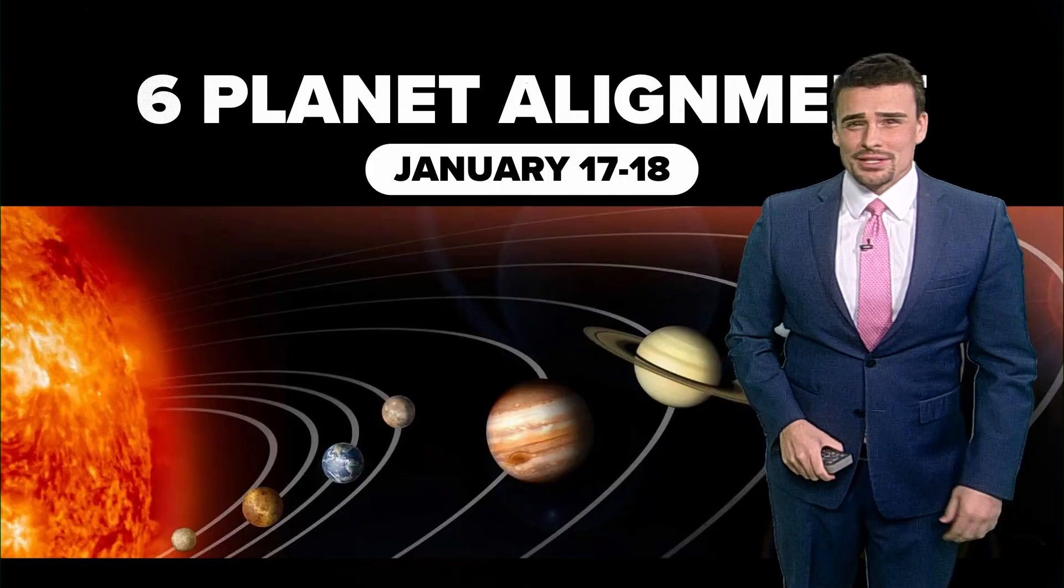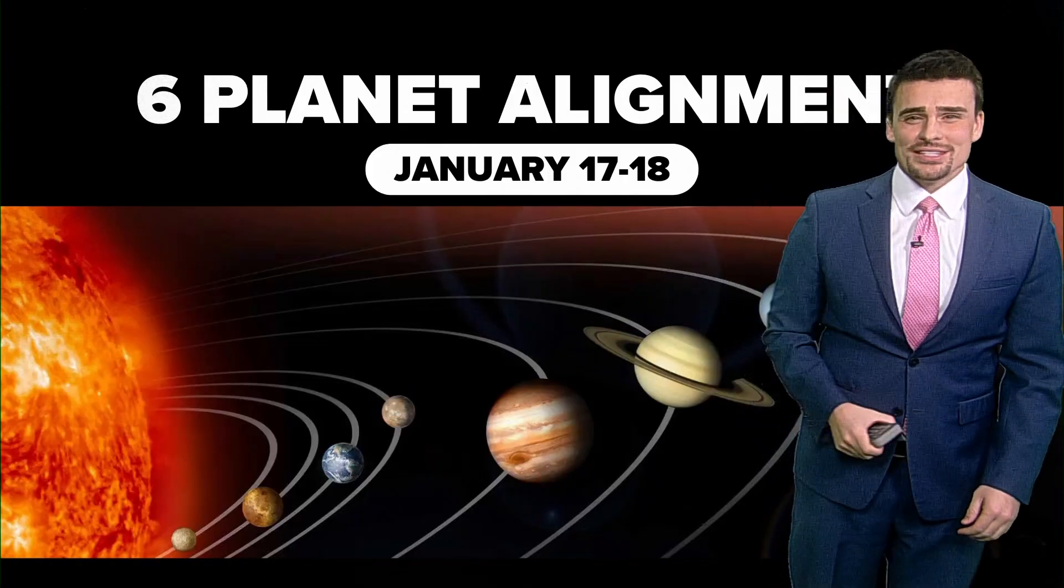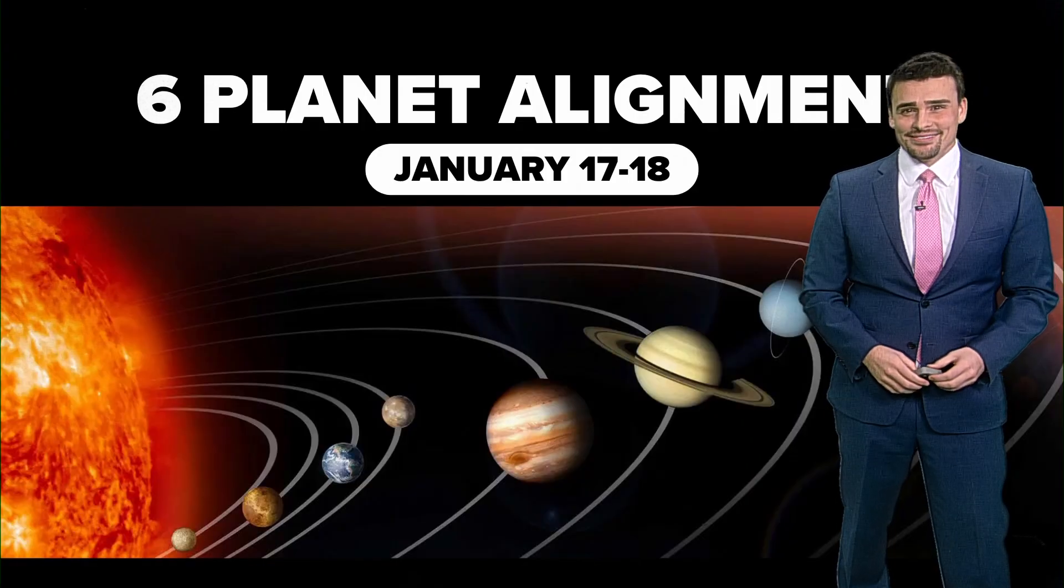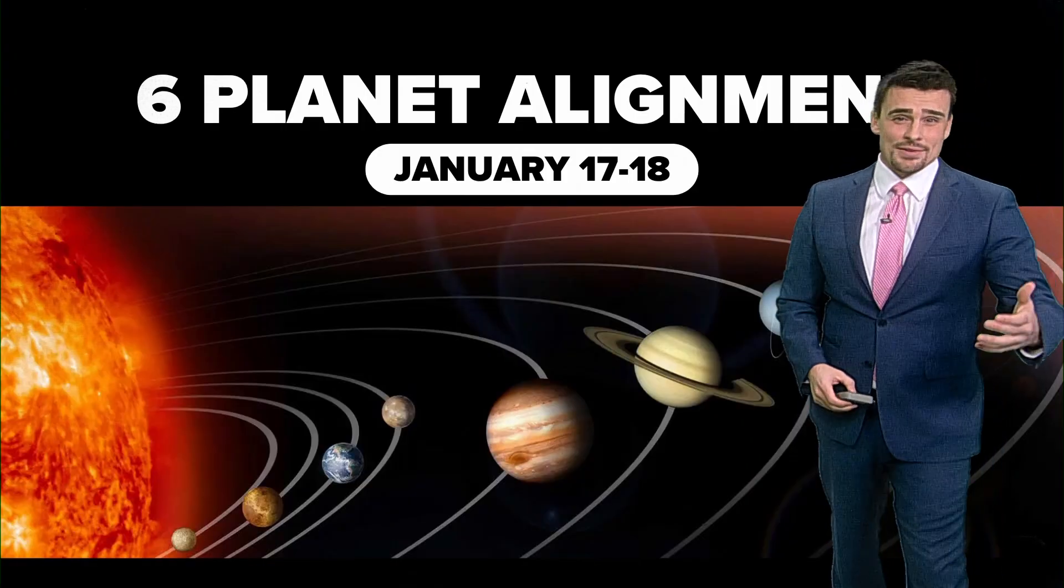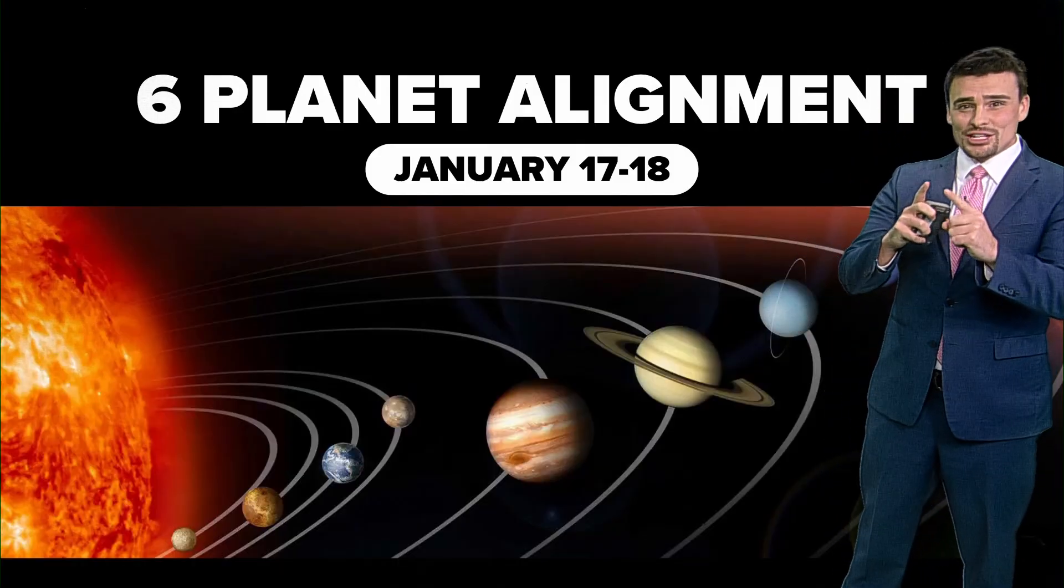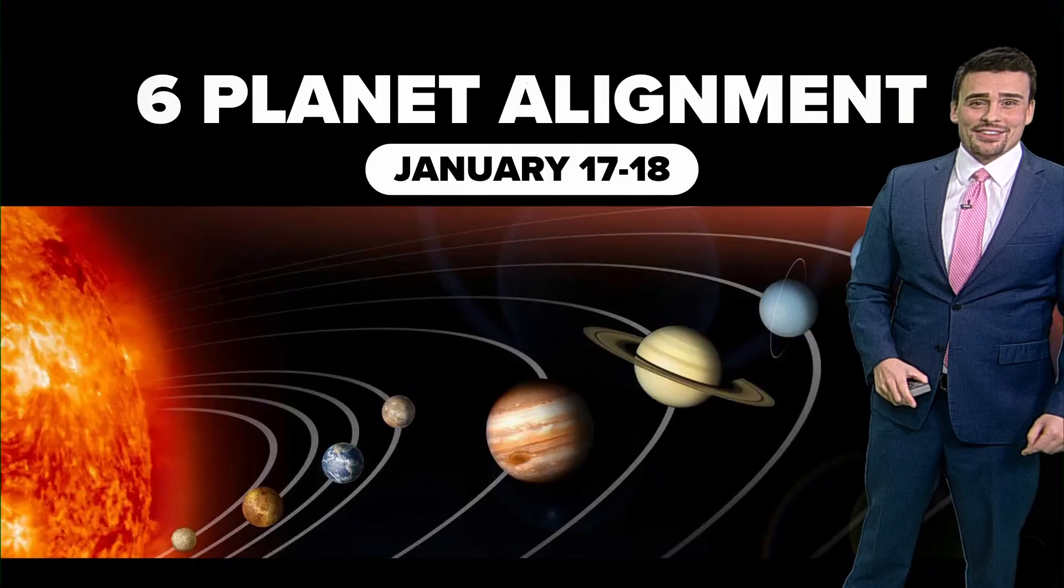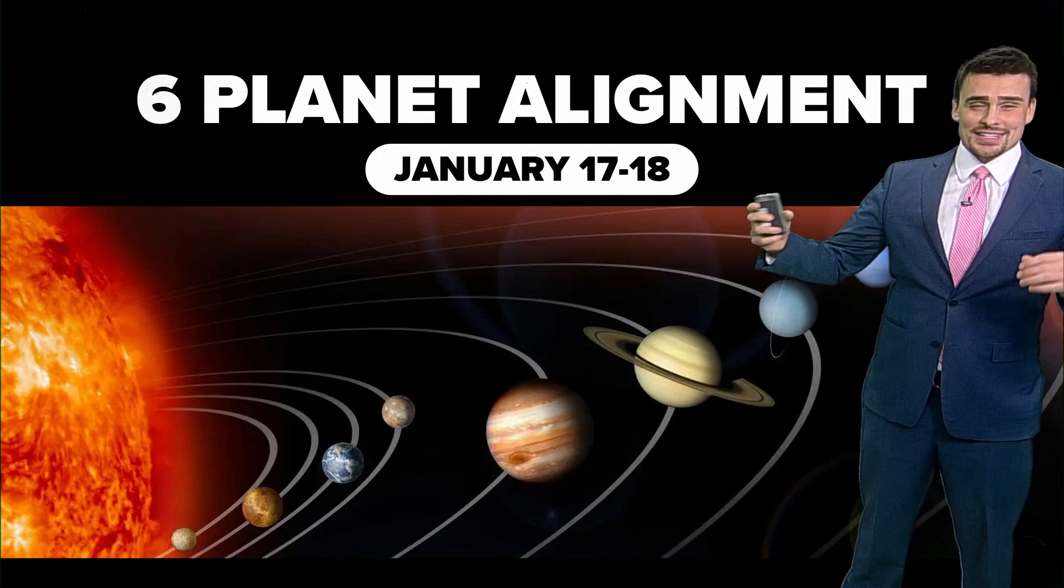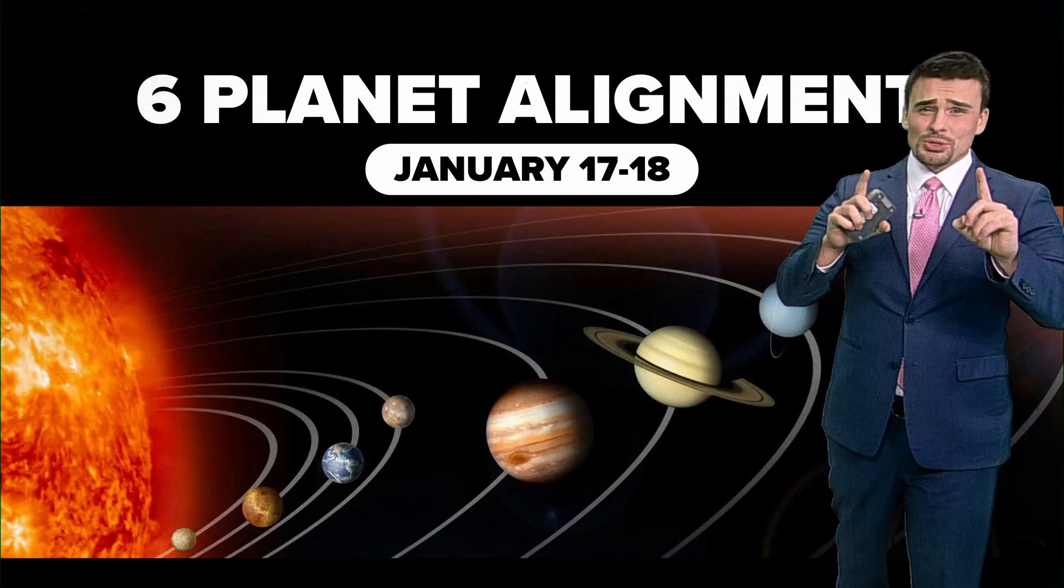How rare is one of these planet alignments really? Let's go into some of the details. A two to four planet alignment, they're pretty common. We actually get several of those throughout the year, or one of those conjunctions where you've got two planets really close together. In fact, we'll have one of those inside the alignment coming up for January 17th and 18th, but those are really common.